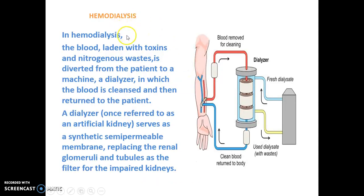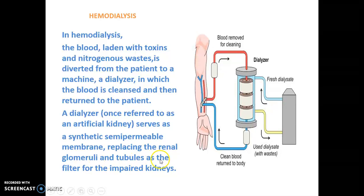In hemodialysis, blood filled with toxins and nitrogenous waste is diverted from the patient to a machine called a dialyzer, where the blood is cleaned and then returned to the patient. The red line shows blood taken from the patient going to the dialyzer, and after cleaning, blood goes from the dialyzer back to the patient body. This dialyzer is referred to as an artificial kidney — it serves as a synthetic semipermeable membrane replacing the renal glomeruli and tubules as the filter for the impaired kidneys.